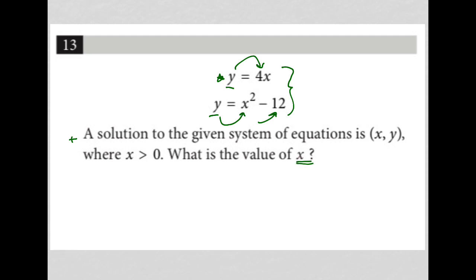So that's what we're trying to find. Anytime I have a system of equations both isolated for y, what I like to do is set each equation equal to the other. Basically, if y equals 4x and y equals x squared minus 12, then 4x should equal x squared minus 12.